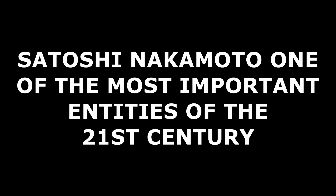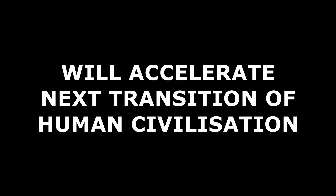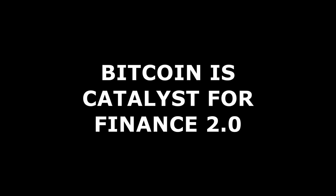Overall, a speculative thesis would be the following. Satoshi Nakamoto is one of the most important entities of the 21st century, and will accelerate the next transition of human civilization. Trusted third parties are security holes. Bitcoin is the catalyst for finance 2.0, whereby value transfer is conducted in a more meritocratic and decentralized fashion.